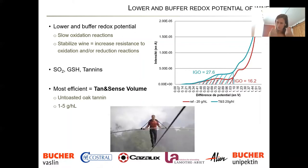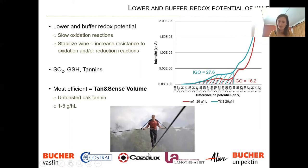To explain this more visually: imagine your wine is a man walking on a tightrope — depending on environmental conditions, he can easily fall towards oxidation or reduction. The job of Tanninsens Volume is to make that line wider, improving his equilibrium. We're improving the stability and balance of the wine, making it much more stable and resistant to environmental conditions.